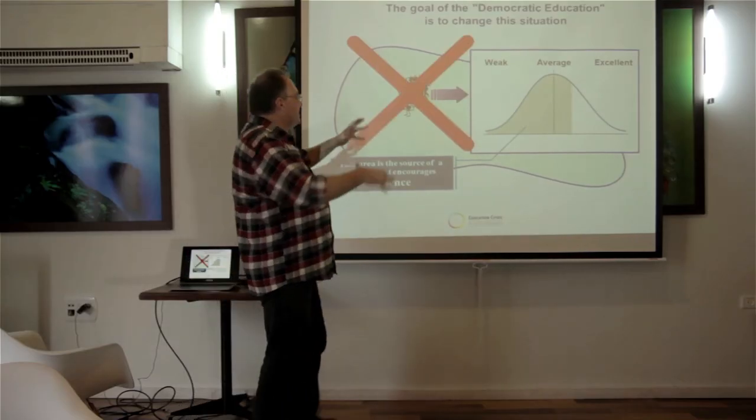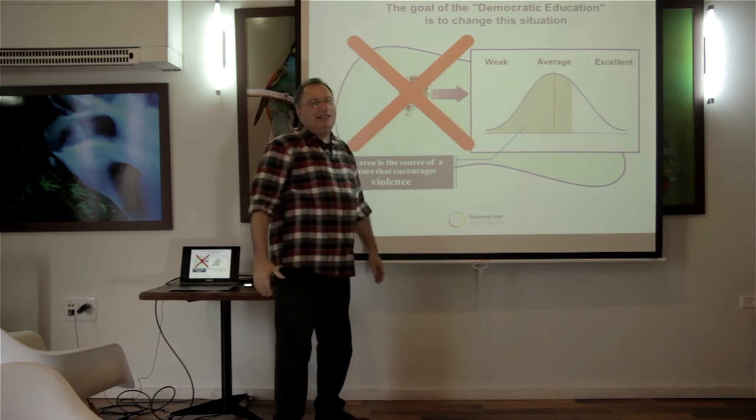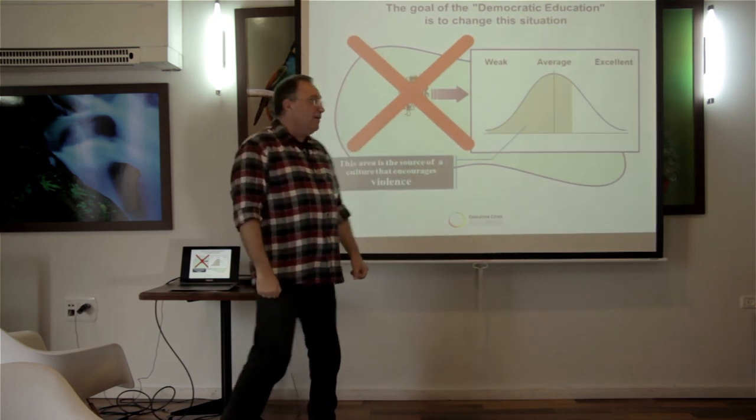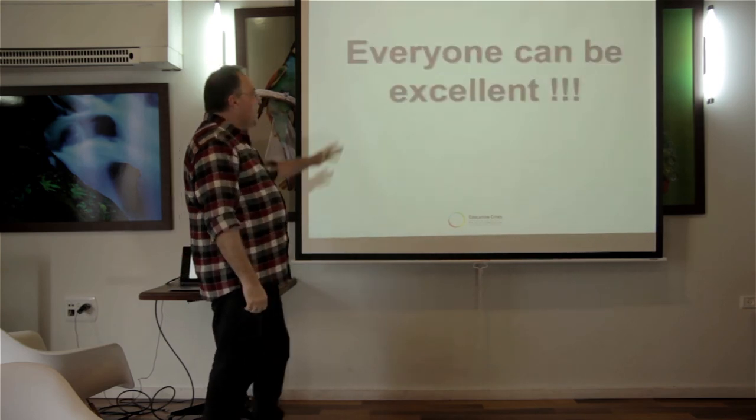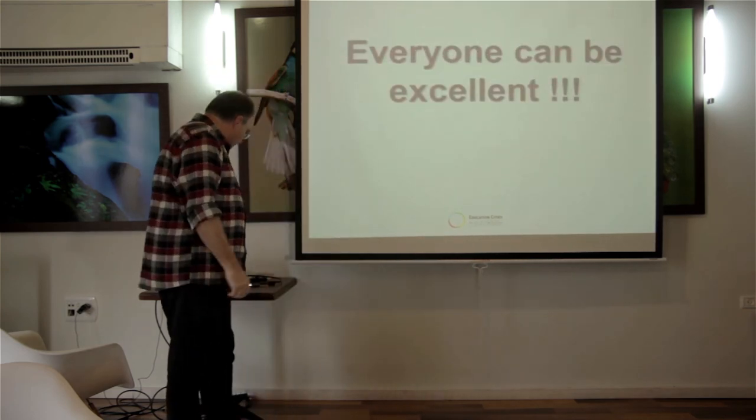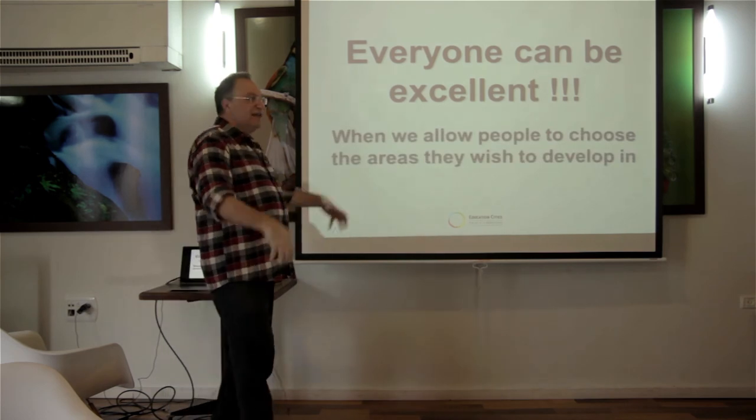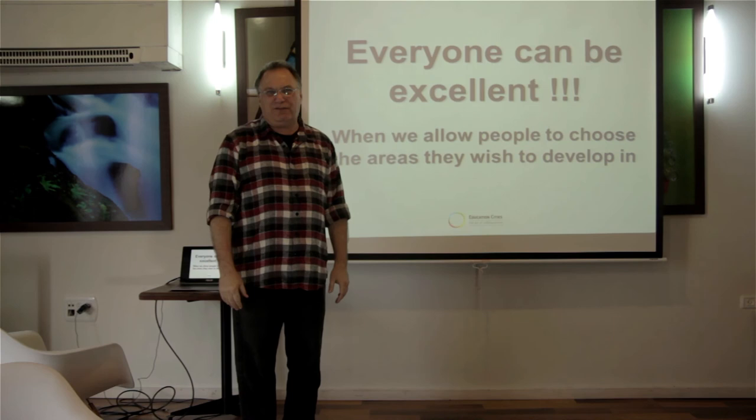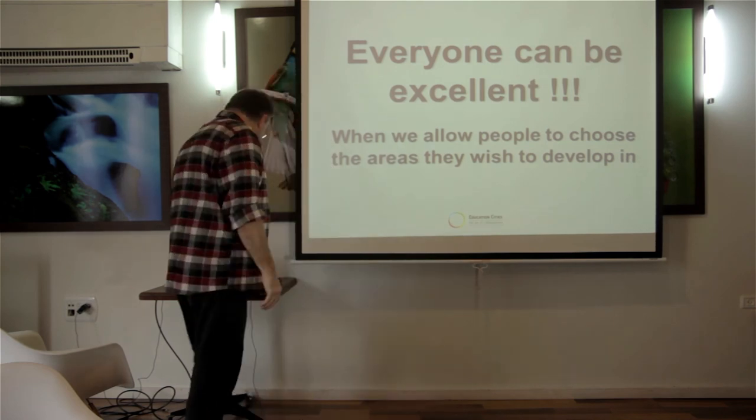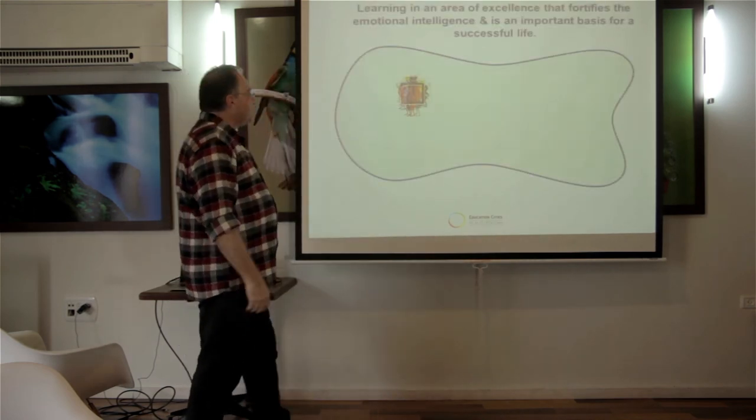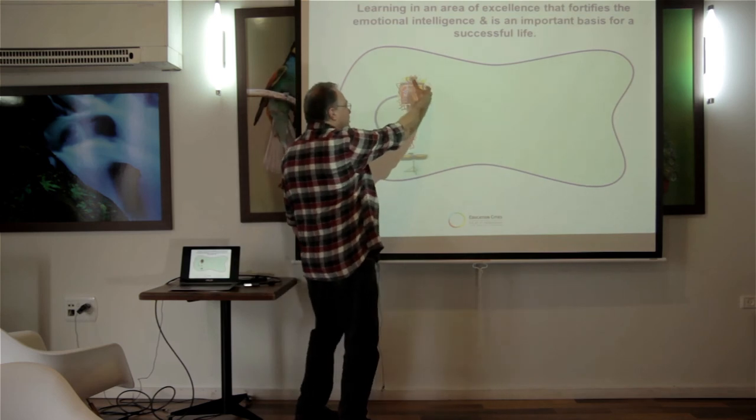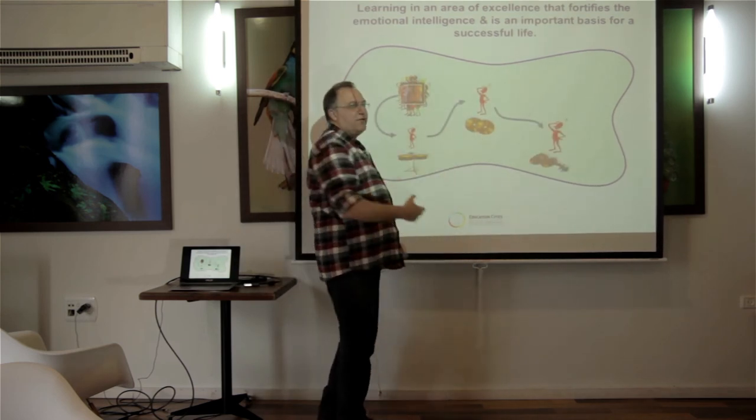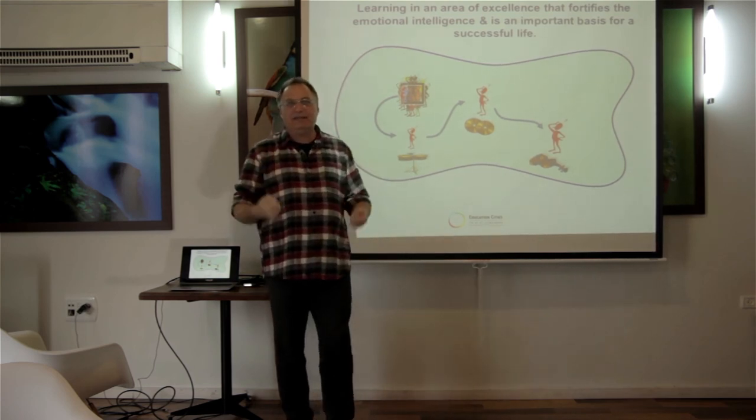The idea is that democratic education does not get this idea of the box, of the square. What we are saying is that everyone can be excellent. Everyone can be excellent if we give him to choose the area that he can develop himself. And in this situation, we take the student in democratic education outside of the box and looking from the area that they can be successful.